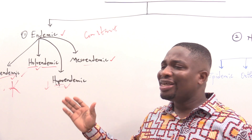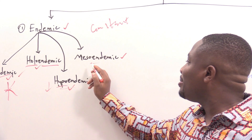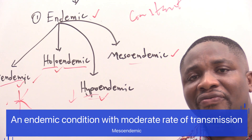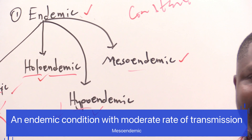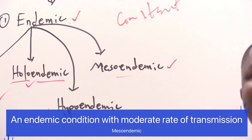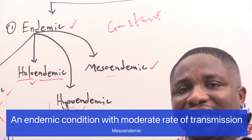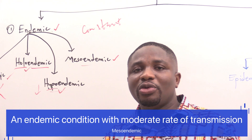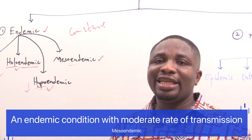Finally, let's talk about the last subtype of the endemic: mesoendemic. Mesoendemic simply refers to an endemic condition or disease having a moderate rate of infection or transmission.